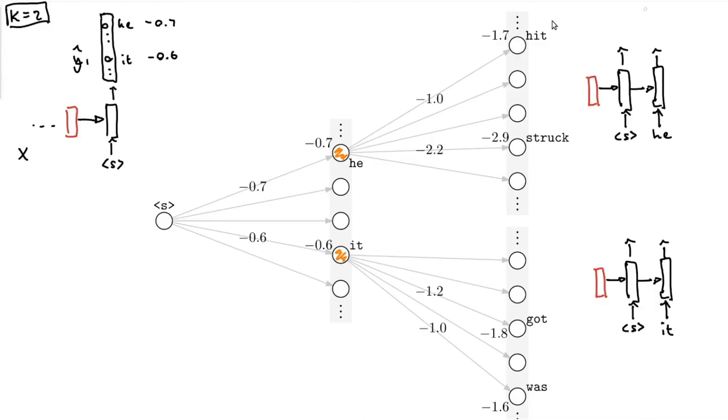So now we get this enormous output here. This is y hat 2. And here we also have an enormous output over all of the vocabulary. This is also y hat 2, not the same as the one at the top. And what we do is we look at the two highest numbers in this vector. We consider the two highest numbers, which in this case is hit and struck. You take the log probabilities that you get here and you add it to the one from the previous time step.